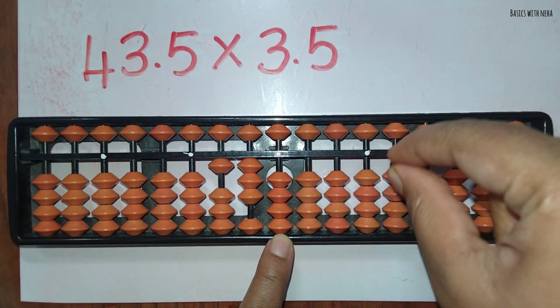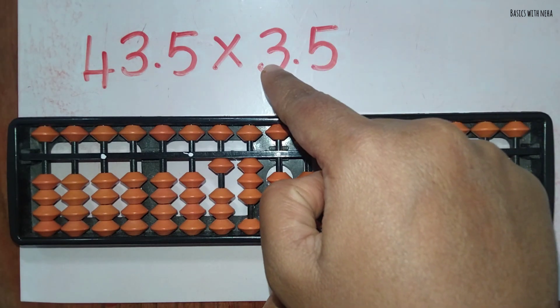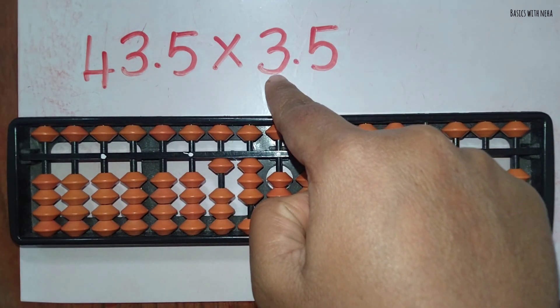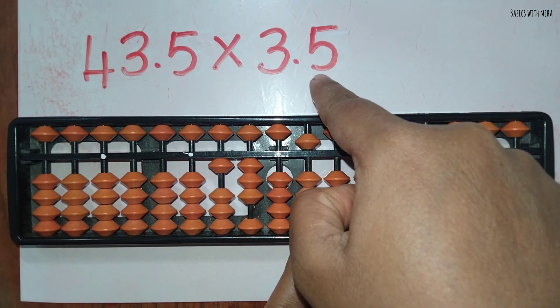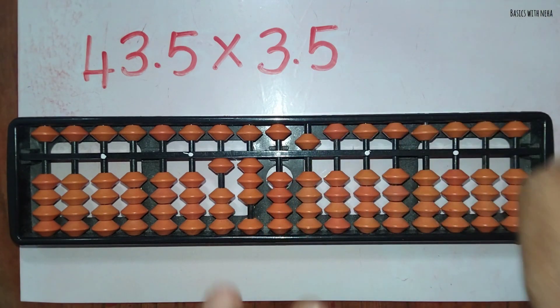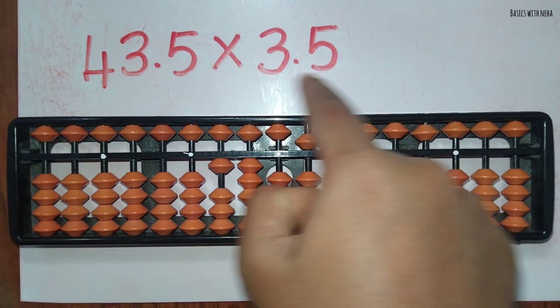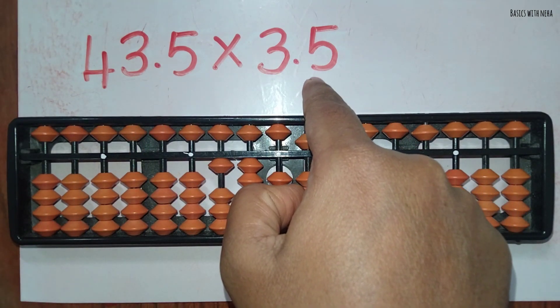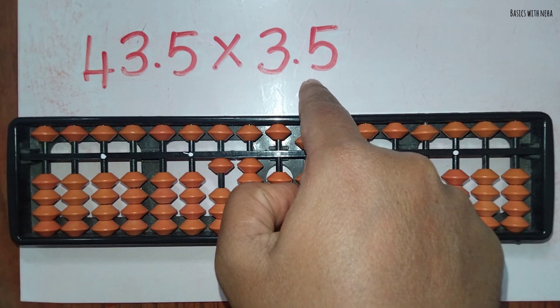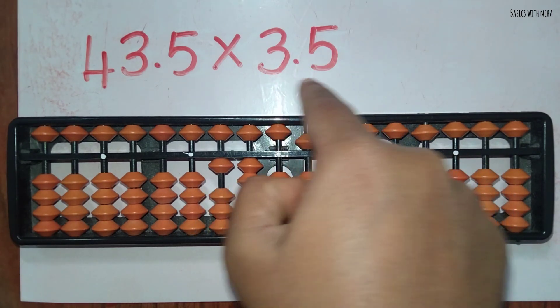Now we are done with the multiplier one's place. Now we should do after the decimal. So now don't worry about anything. You can just ignore the multiplier. Just see the multiplicand, because in the multiplier we don't have any specific place value before the decimal. It is after the decimal, so don't worry about this.